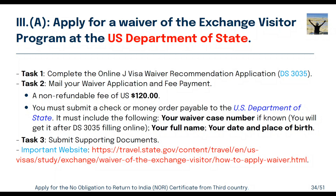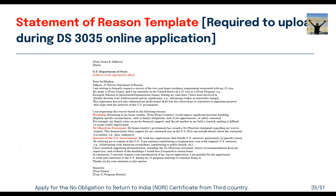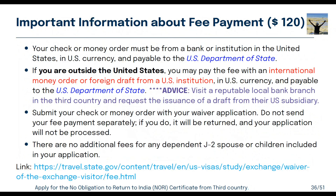You also need to provide a Statement of Reason to the Department of State explaining why you need the waiver. I have provided a standard template you can use or modify. If you are in a third country and cannot get a US check or money order, visit a reputable local bank and request a draft from their US subsidiary, payable in US dollars. If you have dependents with J2 visa status, mention their details when filling DS-3035 — they do not need to pay an additional fee.